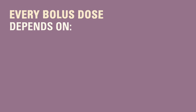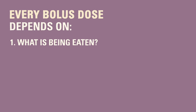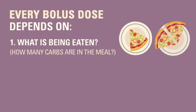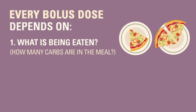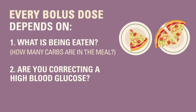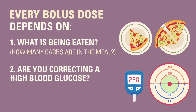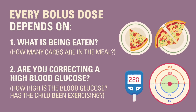Every bolus insulin dose depends on a couple of things. First, the amount of bolus insulin needed depends on what is being eaten — specifically how many grams of carbs are in the meal. This will change depending on the type and amount of food eaten. Second, if you are correcting a child's high blood glucose, you will need to know how many units of insulin to give to bring the blood glucose back into the target range without going too low.